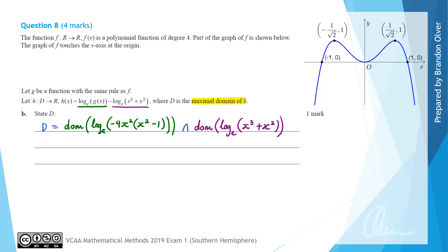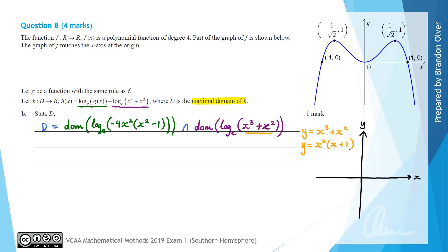I'll sketch the rule y = x cubed plus x squared, which is the expression inside that log. Rewriting in factorized form as y = x squared(x + 1), this tells us there's an x-intercept at minus 1 and a turning point at (0, 0). It's a positive cubic so it has the standard shape. That is the graph of x cubed plus x squared, the inner function of log e of (x cubed plus x squared).